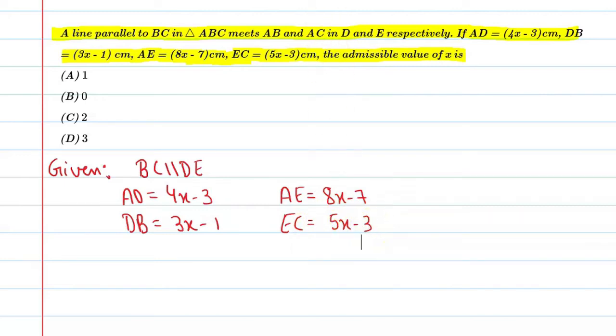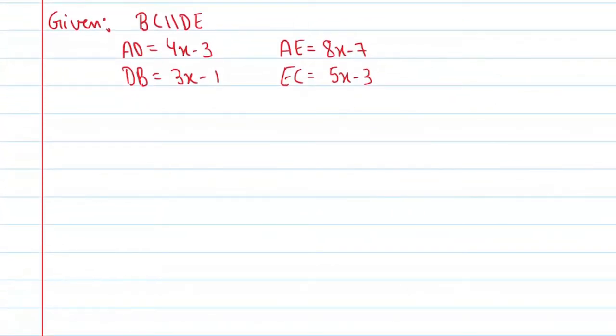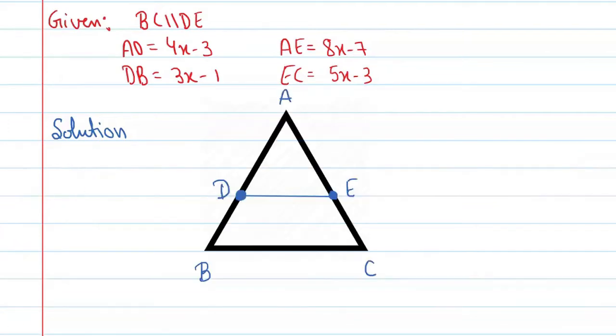So let's start the solution and look at the figure to see how we can solve this question. This is the solution. First, let's look at the figure. So you can see this is the figure of triangle ABC. In this, there's a point D on AB and a point E on AC. When you join D and E, you get a line, and the question states that a line is parallel to BC and meets the other two sides at D and E.